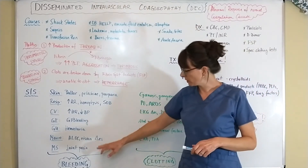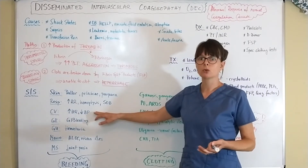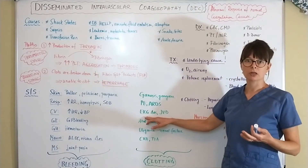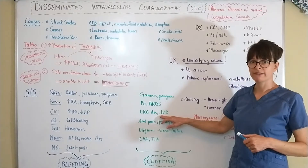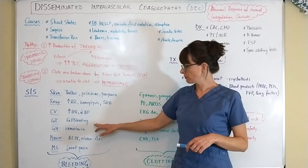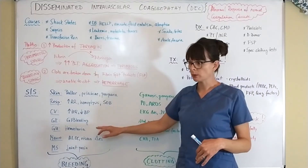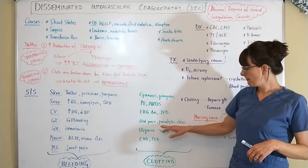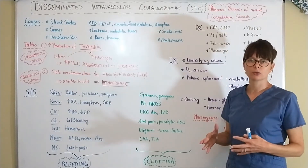In the cardiovascular system, bleeding causes heart rate to rise as blood pressure drops and blood volume is lost. Clotting can cause EKG changes, myocardial infarction, heart failure, and JVD. In the GI system, bleeding may present as blood in vomitus, coffee ground emesis, or rectal bleeding. Clotting may cause abdominal pain due to reduced blood flow to the GI system.